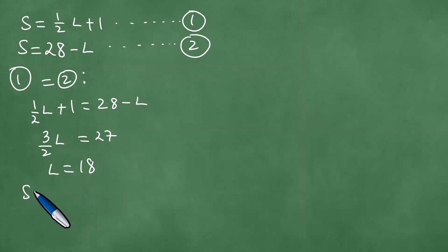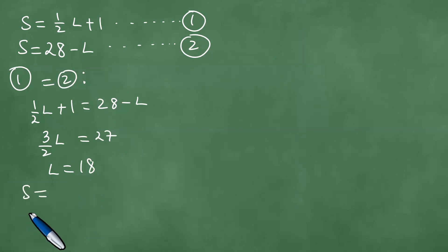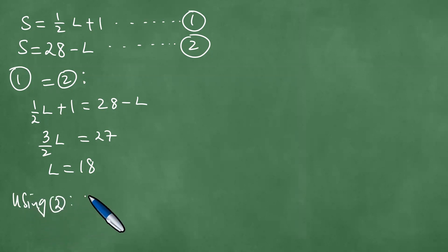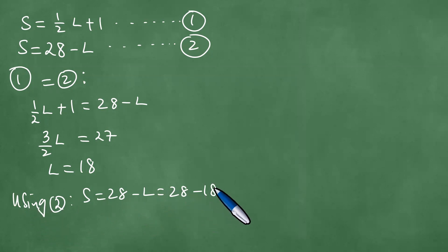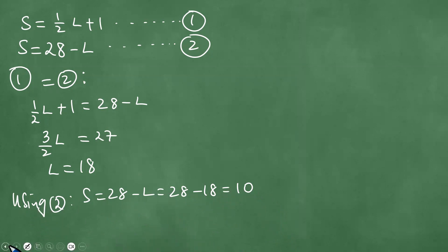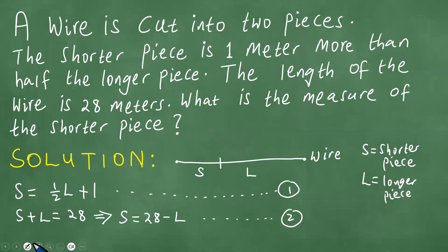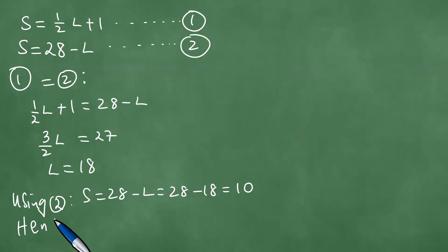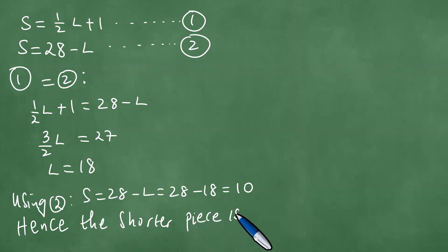If L equals 18, we can find the shorter piece using Equation 2. Equation 2 says S = 28 minus L, which is 28 minus 18, giving S = 10. So we have that S is 10, and the question asked for the measure of the shorter piece.